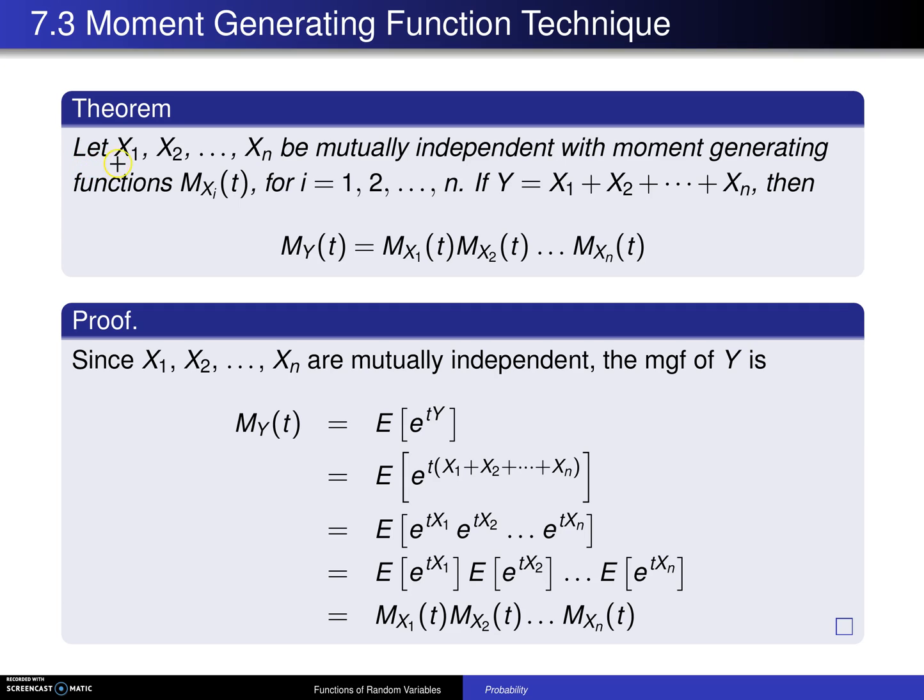Here is the theorem that drives it. Let X₁, X₂, up to Xₙ be mutually independent with moment generating functions M_{Xᵢ}(t) for i = 1 to n. Notice that each one of these random variables can have its own separate moment generating function. They have to be mutually independent, but they do not have to be identically distributed.